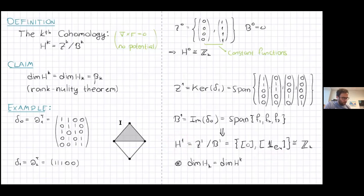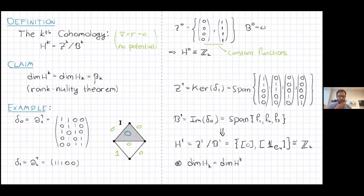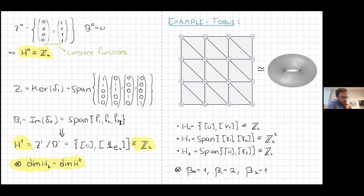In dimension one, a non-trivial co-cycle is the function that is one on the blue loop's outer edge and zero everywhere else. This is a co-cycle because its co-boundary is zero — summing the values along the only triangle gives zero. You can also show it's not a co-boundary, confirming that the first cohomology has one non-trivial element, matching beta_1 equals one. Both homology and cohomology give the same dimension, but one looks at functions while the other looks at lists of simplexes.